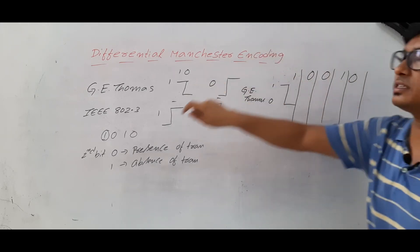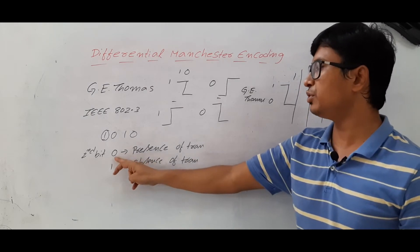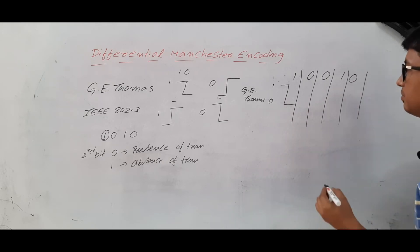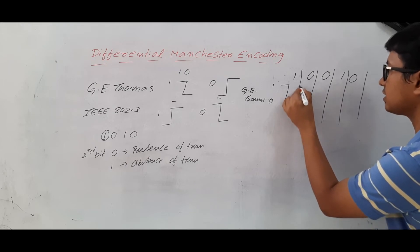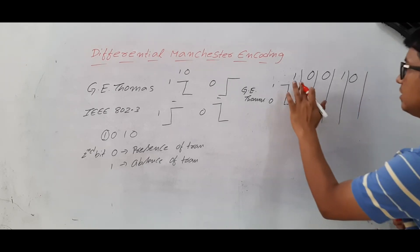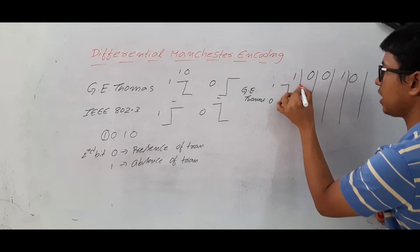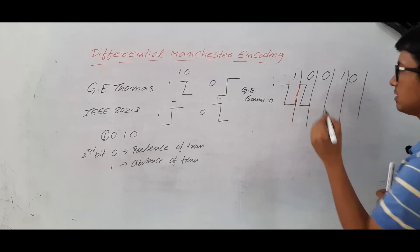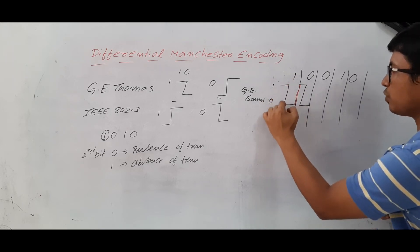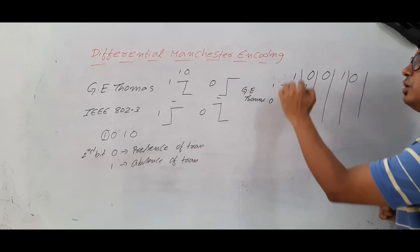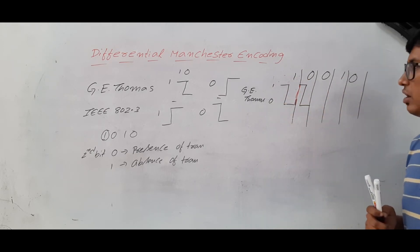Now come to the second bit, which is 0. From second bit onwards, if you get a 0, there is a presence of transition. Presence of transition means you are here and you have to go here — you have to shift. Then you have to represent the 0. You represented 1 as one-zero, then you got a 0, so there is a presence of transition, meaning from low you have to go to high, then represent.